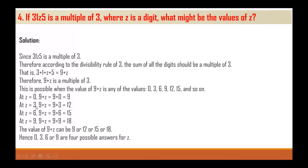At z = 0: 9 + 0 = 9. At z = 3: 9 + 3 = 12. At z = 6: 9 + 6 = 15. At z = 9: 9 + 9 = 18. The value of 9 + z can be 9, 12, 15, or 18. Hence z = 0, 3, 6, or 9 are the four possible answers.